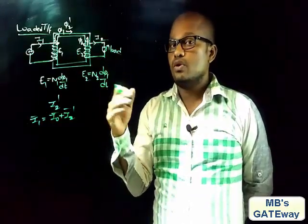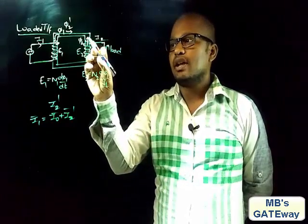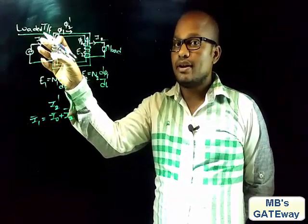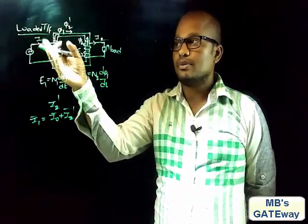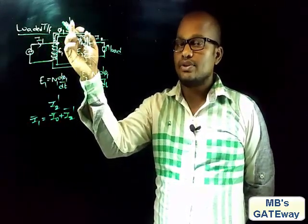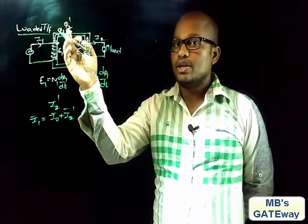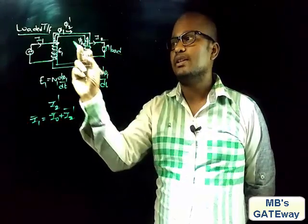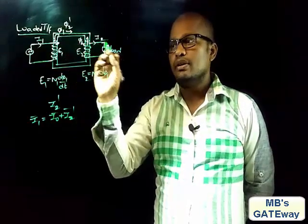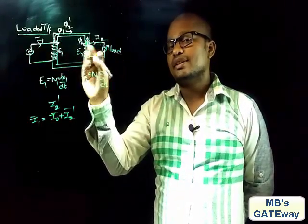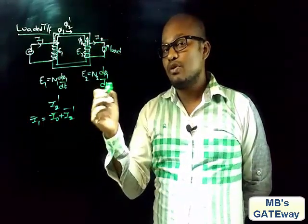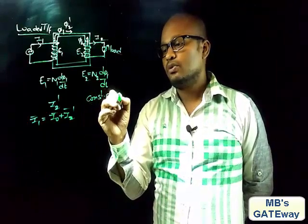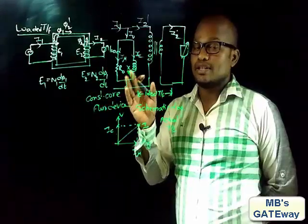So whatever load you place, a corresponding flux φ2 is produced, and accordingly the transformer draws extra current from the supply, generating φ2'. Since φ2 and φ2' are equal and opposite, they cancel, and the flux remaining in the core is always φ1. This is why the transformer is called a constant core flux device — irrespective of load, the flux in the transformer core remains constant.